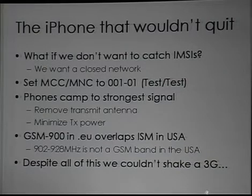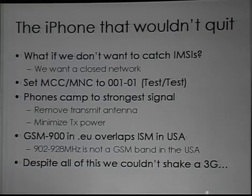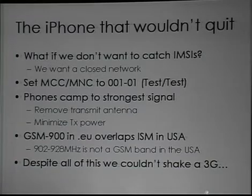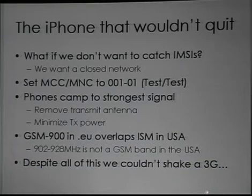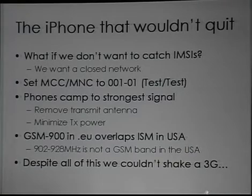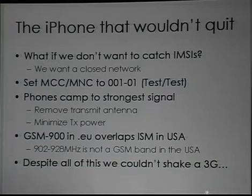The other thing you'll want to do is reduce your output power. You'll see I've got no antennas on here. Phones find base stations by camping to the strongest signal, so if you make your signal deliberately weak, phones shouldn't camp to you - it's fairly logical. The third thing I'm doing here is using a GSM 900 frequency, which is a European GSM frequency that over here overlaps the ISM band. So I'm not using a GSM band here, which is why a standard single band or dual band US cell phone will not be able to see the BTS. You need a quad band phone because I'm operating in GSM 900, which is the ISM band over here.